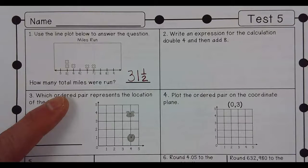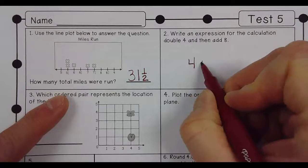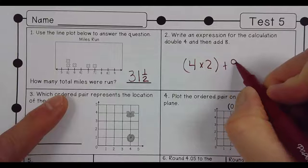Write an expression for the calculation, double four. So double four is four times two. And then add eight. Four times two plus eight.